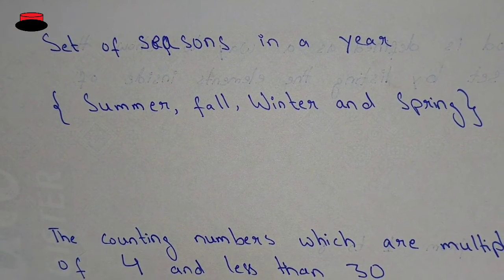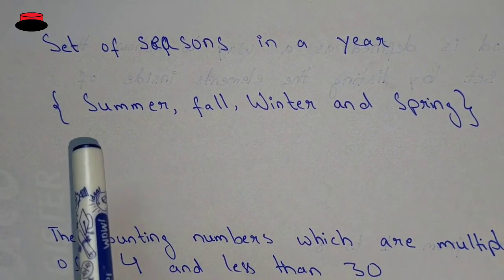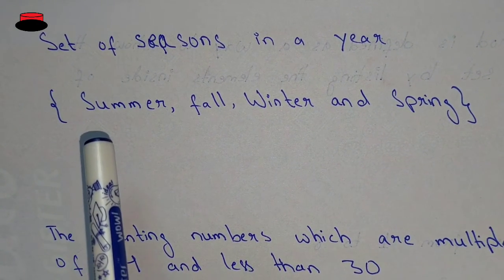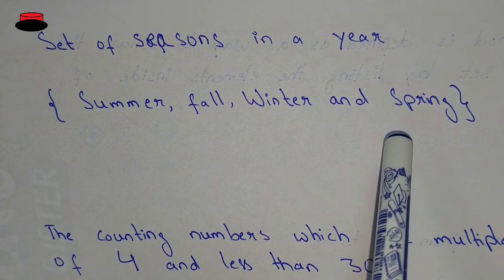So here we are writing the set of seasons in a year. We know that there are four seasons in one year: summer, fall, winter, and spring.